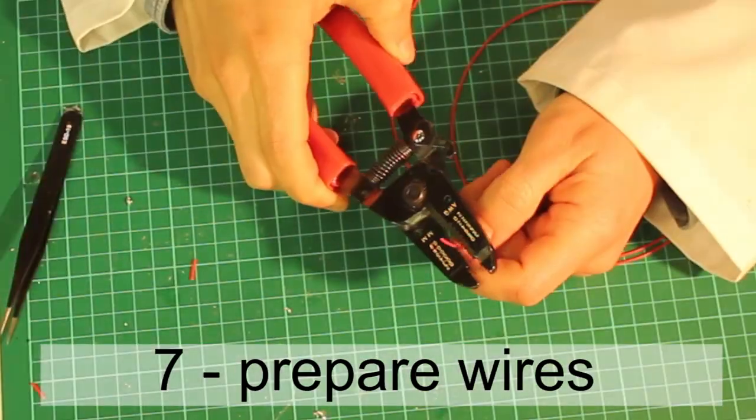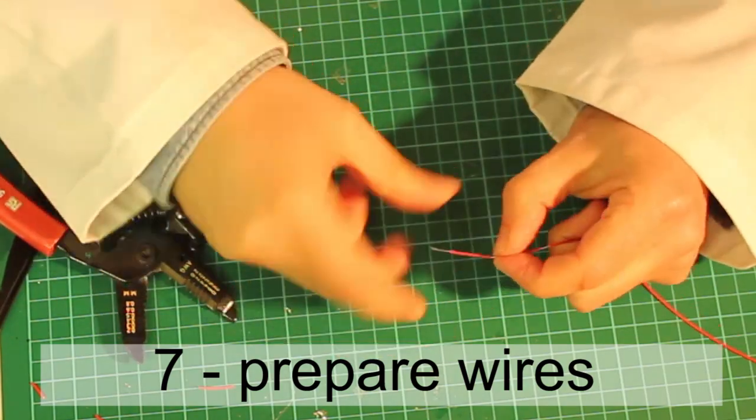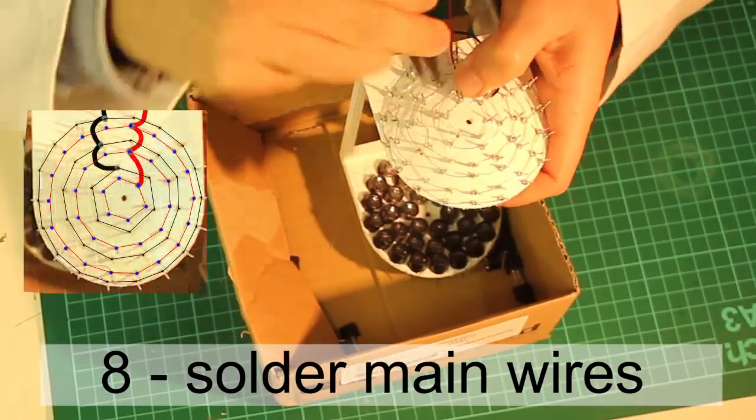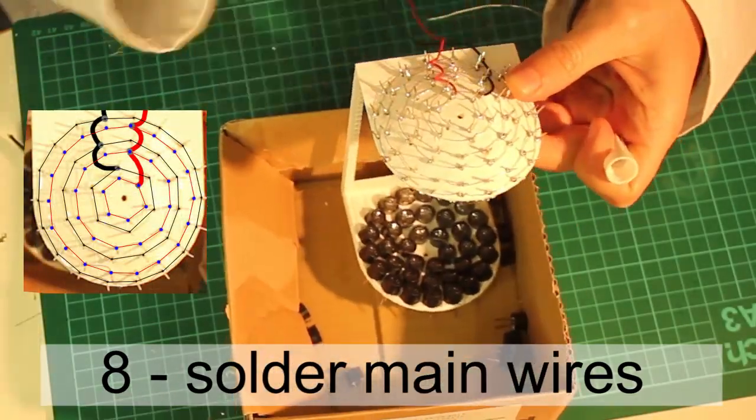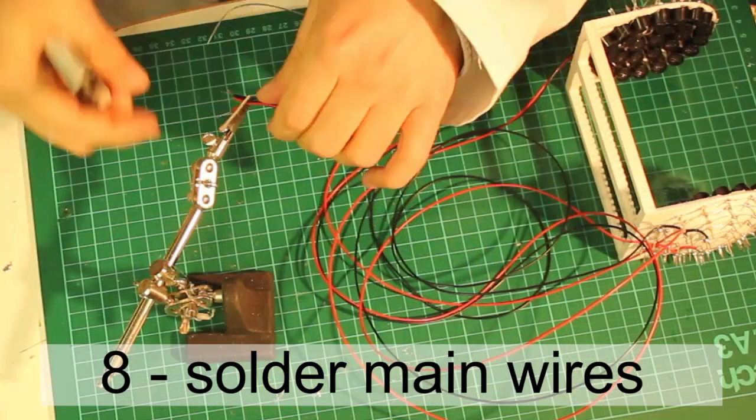We need four long wires with one side exposed and three exposed areas on the other side. Solder the black wire to three non-marked legs and the red one to three marked legs. Solder to secure them and contain the other sides.